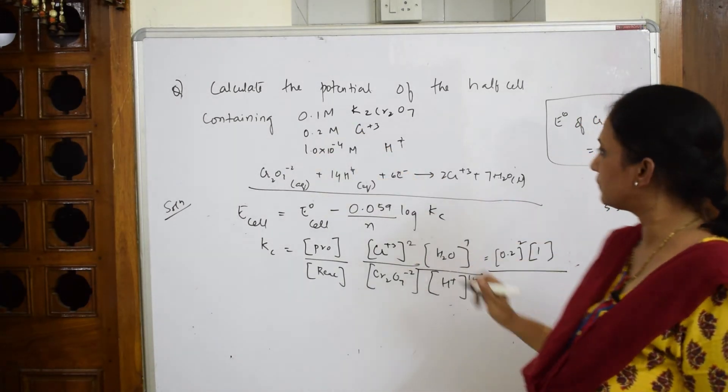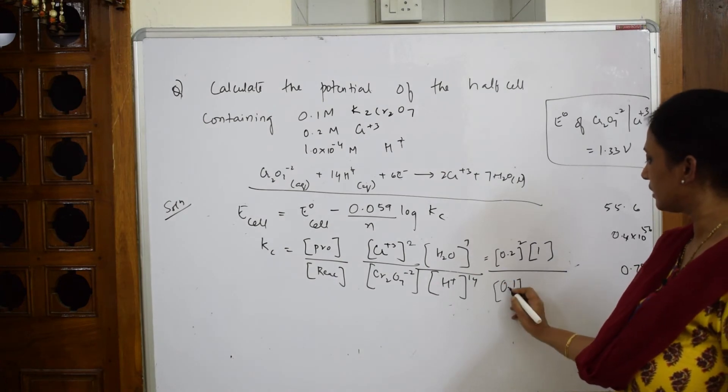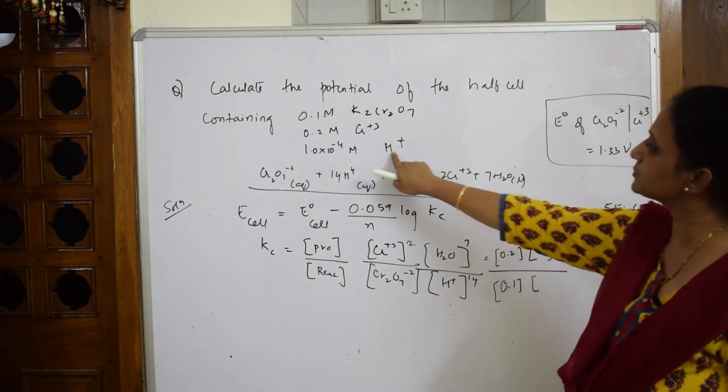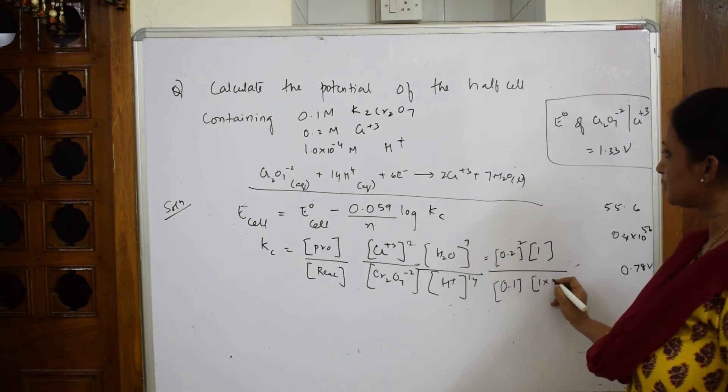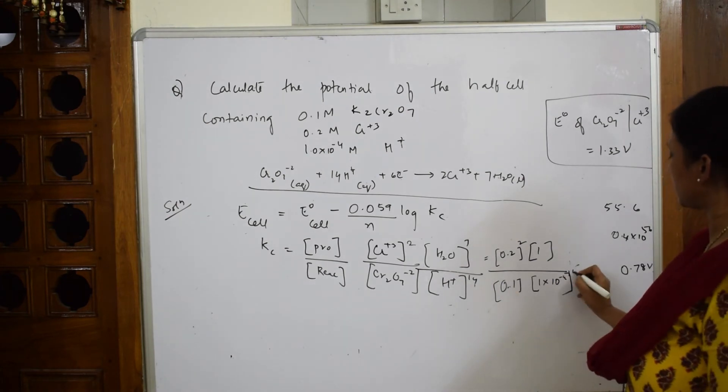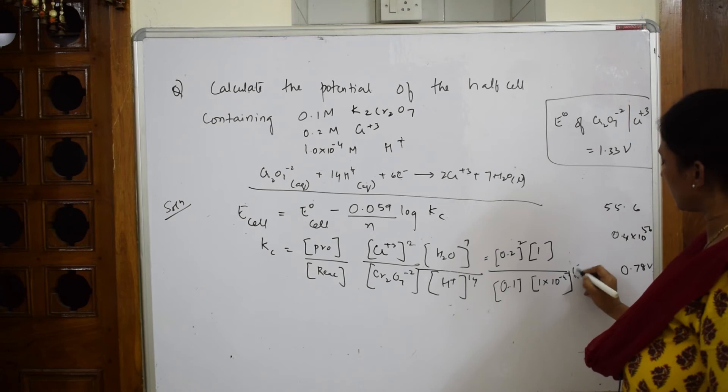How much do they give us? 0.1 into H+. How much did H+ given to us? 1×10^-4 raised to the power of 14.